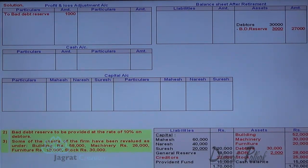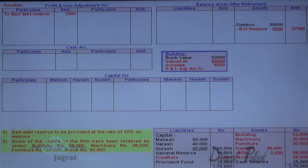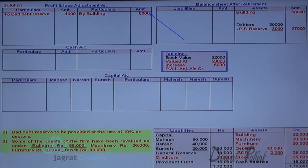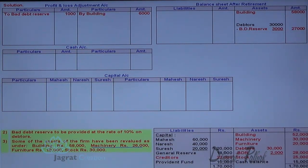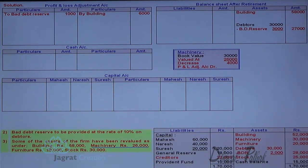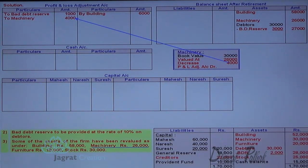Next adjustment: building revalued at 58,000 — book value is 52,000, so increase of 6,000 is credited to the profit and loss adjustment account; building appears in balance sheet at 58,000. Machinery valued at 26,000 — book value is 30,000, so decrease of 4,000 is debited to the profit and loss adjustment account; machinery appears in the balance sheet at 26,000.